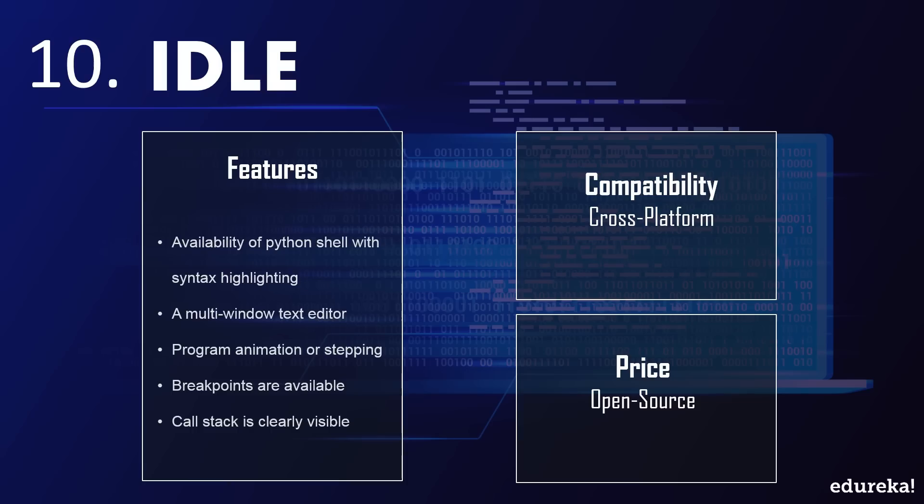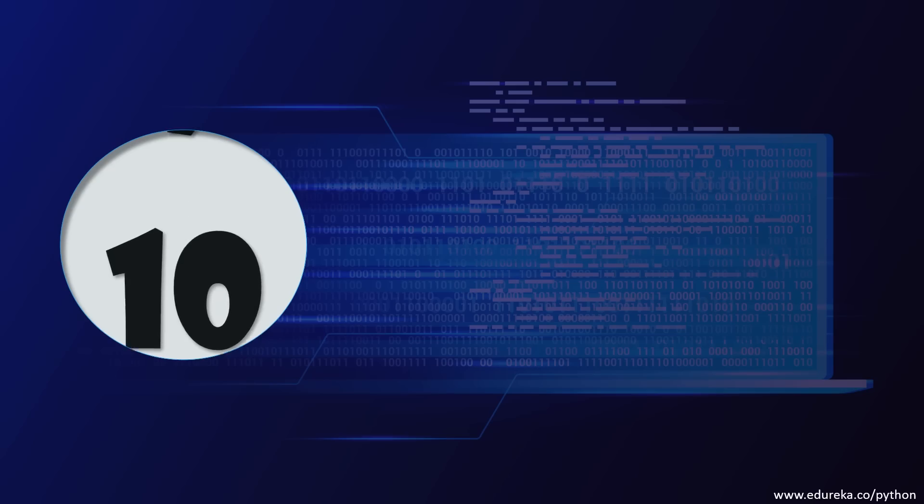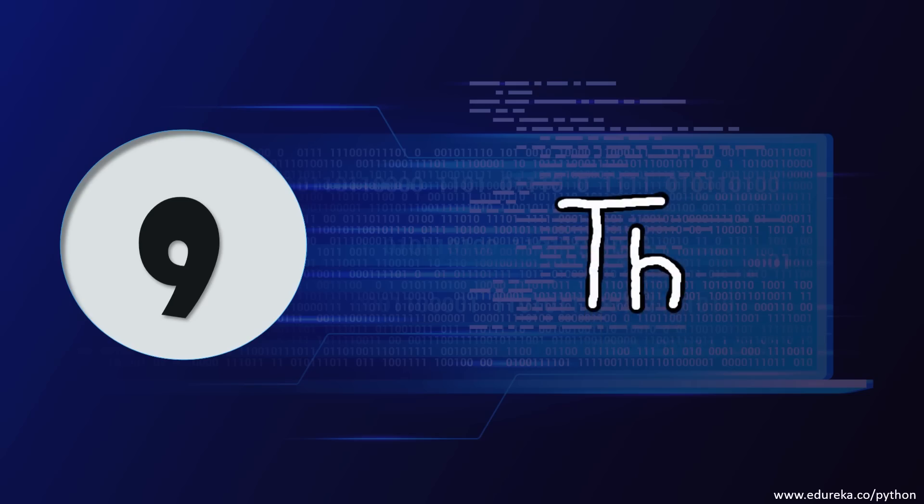IDLE also provides special features such as a Python shell with syntax highlighting, a multi-window text editor, program animation or stepping which refers to executing one line of code at a time, breakpoints to ease debugging, and a clearly visible call stack.